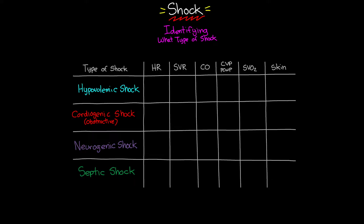Starting with hypovolemic shock: the body attempts to compensate for decreased cardiac output and perfusion by increasing heart rate — often a pretty sizable increase. With SVR, the body similarly works to compensate, so we're going to see a markedly increased systemic vascular resistance as the body squeezes down to maintain perfusion.